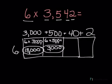Next, I do 6 times 40. 6 times 4 is 24, and I have 1 zero. Now I'm going to do 6 times 2, which should be a simple math fact. 6 times 2 is 12.